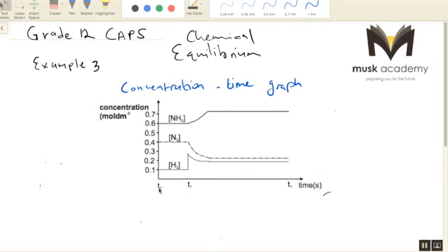From T0 to T1, you can see that the reaction, whatever it is, is at equilibrium. And from T1, you can see that there's a disturbance on the equilibrium and a new equilibrium is reached at this point.